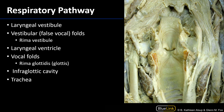The laryngeal cavity is the space bounded by the larynx. Here we can see the posterior aspect of the larynx has been cut and reflected away. We can see the cricoid cartilage, the arytenoid cartilages, and the epiglottis. The space between the arytenoid cartilages and the epiglottis is known as the laryngeal vestibule — much like the vestibule you walk into when entering a building.